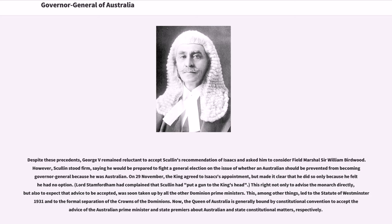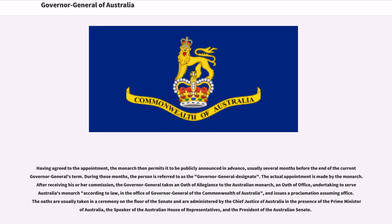Now, the Queen of Australia is generally bound by Constitutional Convention to accept the advice of the Australian Prime Minister and state premiers about Australian and state constitutional matters respectively. Having agreed to the appointment, the monarch permits it to be publicly announced in advance, usually several months before the end of the current Governor-General's term. During these months, the person is referred to as the Governor-General-designate. The actual appointment is made by the monarch, and after receiving their commission, the Governor-General takes an oath of allegiance to the Australian monarch, an oath of office, and issues a proclamation assuming office. The oaths are usually taken in a ceremony on the floor of the Senate, administered by the Chief Justice of Australia in the presence of the Prime Minister, the Speaker of the Australian House of Representatives, and the President of the Australian Senate.